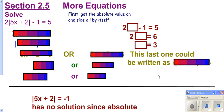We're going to take a look at more equations. Here we're dealing with absolute value. Whenever you're dealing with absolute value, you want to make sure you get the absolute value by itself. So if you're trying to solve something like this, you'd have to add 1, then get rid of the 2 by dividing both sides by 2, and you would get this.